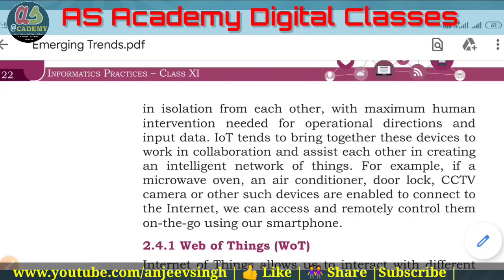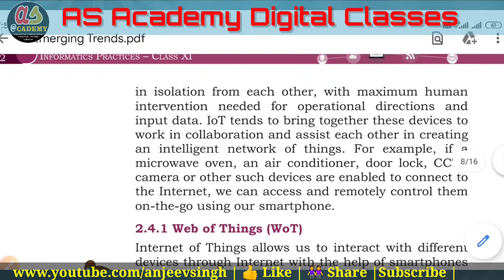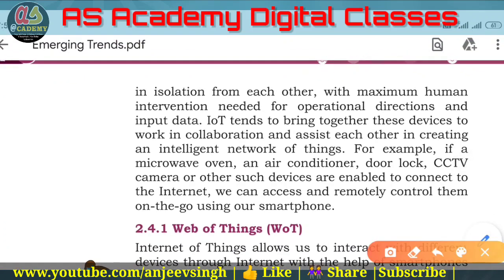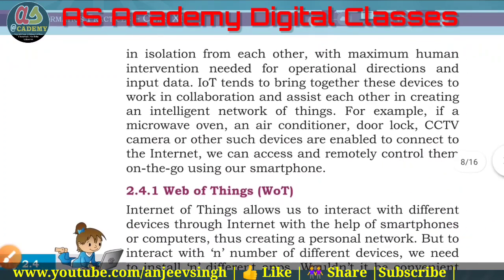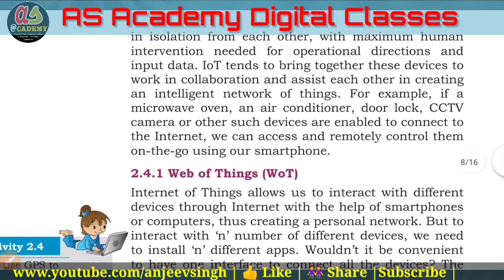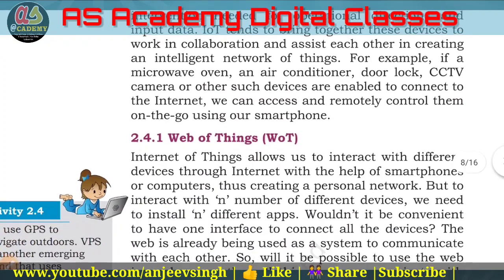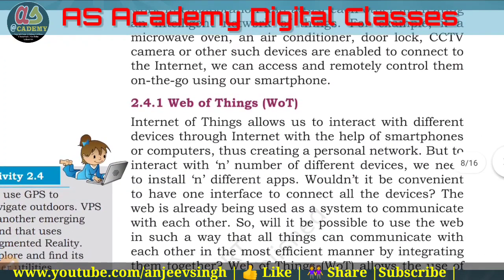Devices like microwave ovens, air conditioners, door locks, and CCTV cameras can be enabled to connect to the Internet. Because these devices can be connected to the Internet, we can access and control them remotely on the go using our smartphones — from anywhere.